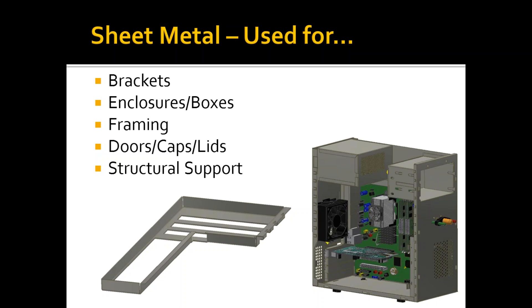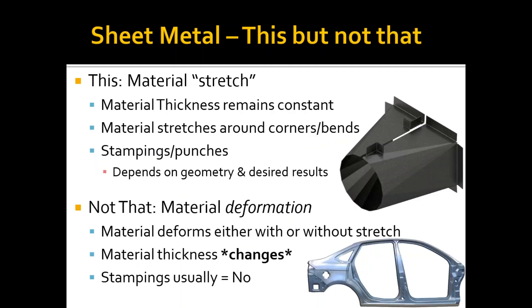Starting at the beginning — letter A — sheet metal: what's it used for? It's used for brackets, various enclosures, boxes, even structural framework, machine framework, product framework. You can have sheet metal doors, lids, caps, and close-offs against structural support. It impacts a lot of different industries and areas. What is it not used for? That's a hang-up for people just coming into sheet metal in a 3D parametric world.